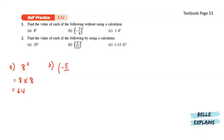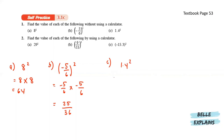Next we have negative 5 over 6, squared. So this is actually negative 5 over 6 times negative 5 over 6. Negative and negative will give us positive. 5 times 5 is 25 over 36. And next for C, we have 1.4 squared. So this is 1.4 times 1.4 and that will give us 1.96.